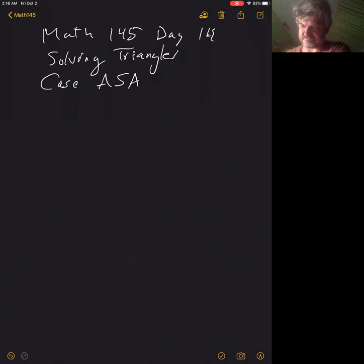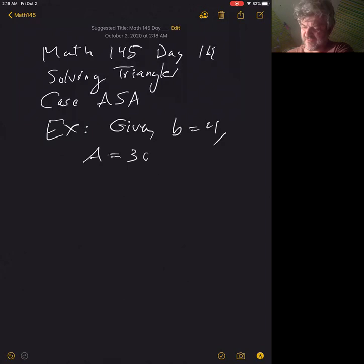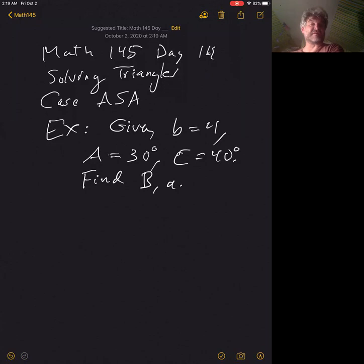This turns out to be surprisingly easy. Look at this example: given side b is 4, angle A is 30 degrees, angle C is 40 degrees. Find the angle at B and side lowercase a.